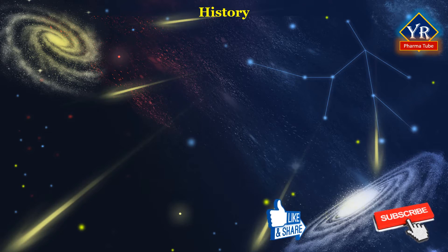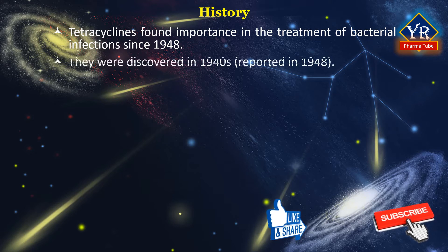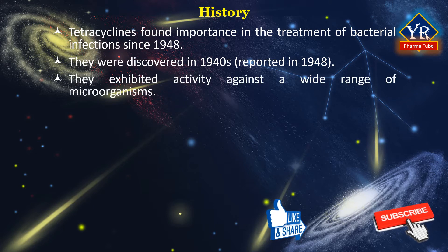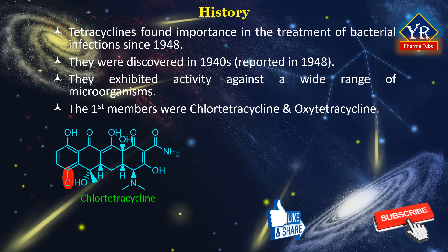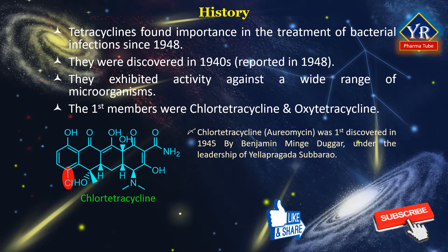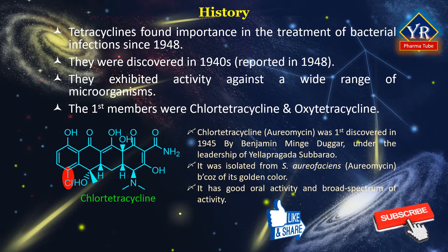The tetracyclines have been found important in the treatment of bacterial infections since their discovery in 1948. They exhibited activity against a wide range of microorganisms. The first members of the tetracycline group to be discovered were chlorotetracycline and oxytetracycline. Chlorotetracycline was discovered in 1945 under the supervision of scientists Ella Pragda Subbarav and Benjamin Duggar. It was isolated from the organism Streptomyces aureofaciens and named aureomycin because of its golden color. The drug was exciting due to its oral activity and broad spectrum of antibacterial activity.